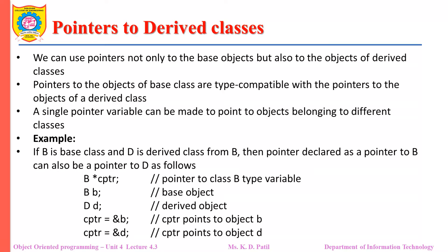We can use pointers not only to the base objects but also to the objects of derived classes. Pointers to the object of the base class are type compatible with the pointers to the objects of the derived class. A single pointer variable can be made to point to objects belonging to different classes.